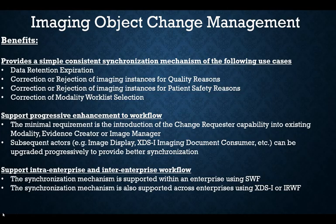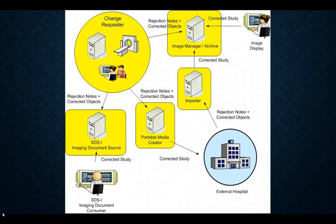The key benefits are a simple, consistent synchronization mechanism and progressive enhancement of the workflow — the change can happen at any point in the workflow and flows both upstream and downstream from that point. This is an example of how a change to patient demographics could be requested and approved, updating data at other points. Notably, both the risk admin and the PACS admin must approve the patient info update, because it's not a good idea to let techs change patient data on their own.